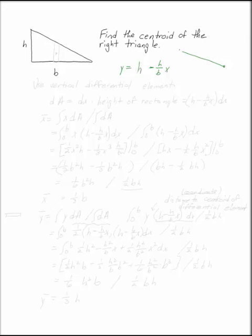So when x equals zero, we get y equals h. Use a vertical differential element to do the differentiation. So my differential element is going to take slices like that, so that dA is the width of dx times the height of the rectangle, so dA is h minus h over b times x dx.